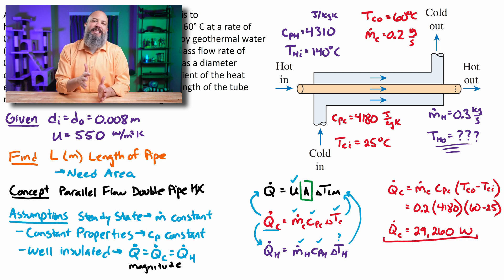And then the 60 minus 25 is the cold outlet temperature minus 25 inlet temperature. This gets us 29.26 kilowatts or 29,260 watts. That is the rate of heat transfer. This value for Q is the same value Q for how much heat is lost by the hot. And then also for Q equals U A delta T, the amount of heat transfer between hot and cold. All three Q values are the same.